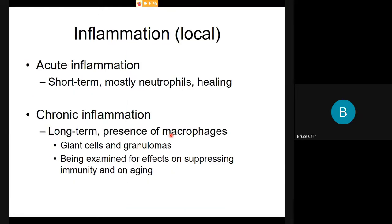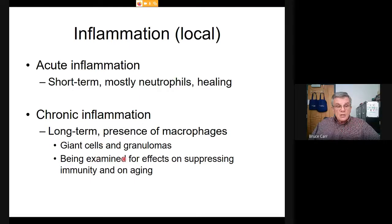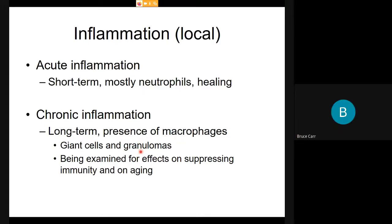Acute inflammation is basically repair and healing of injury, mostly handled by neutrophils — often involving a surface. If this becomes an ongoing condition of a body part, we call it chronic. Long-term presence of macrophages is expected — monocytes produce macrophages in large numbers, and giant cells indicate a kind of infection. Granulomas are present in chronic conditions. We use suppression of immunity as a tool to counter pain, loss of mobility, and other effects of aging and geriatric decline.